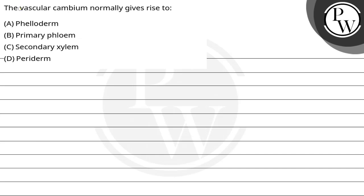Hello, let's see this question. The question says the vascular cambium normally gives rise to options are phelloderm, primary phloem, secondary xylem and periderm.